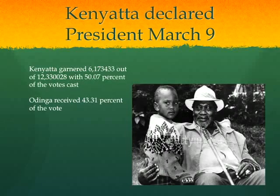Uhuru Kenyatta, son of the first president Jomo Kenyatta, became the fourth president of Kenya. Any way you slice it, he won this election handily. The Western press has reported he won by a narrow margin — that is not correct. He won by seven percentage points. Raila Odinga got 43% of the vote; Kenyatta got 50.07%.